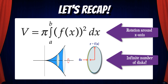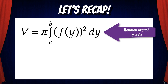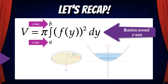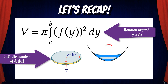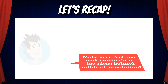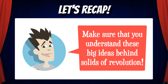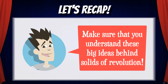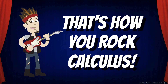When we find the sum of all the volumes of those disks, we have the volume of the solid. To find the volume of a solid rotated around the y-axis, multiply π times the integral from a to b of [f(y)]² dy. Here, a and b are y-values because we're taking an infinite number of horizontal rectangular strips and rotating them around the y-axis to produce disks. Make sure you understand these big ideas behind solids of revolution using the disk method — and that's how you rock calculus!